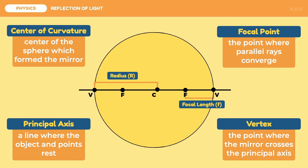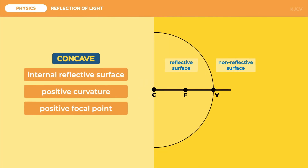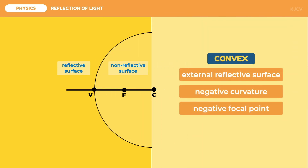The reflective surfaces of spherical mirrors may be on the inside or the outside. If the reflective surface is the interior of the sphere, it is called a concave mirror, and its center of curvature and focal points are both positive in value. If the reflective surface is the exterior, the mirror is convex, with a negative curvature and a negative focal point. The major differences between the two types are the position of the reflective surface and the sign conventions of the points. The vertex is always zero for both. Image formation on spherical mirrors through analytical and ray diagramming methods will be discussed in the next video lessons.